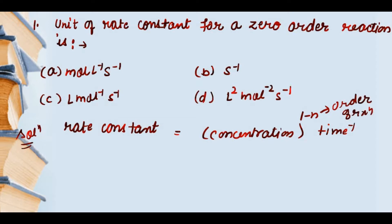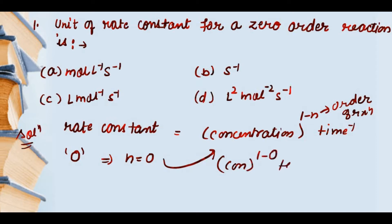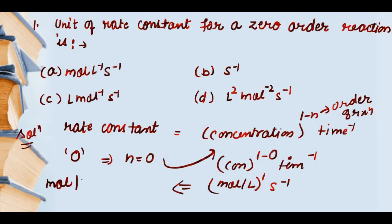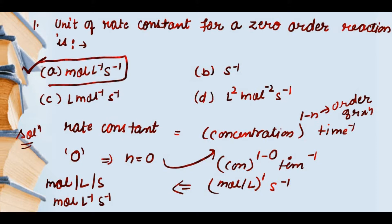Yahaan pe humein zero order reaction di gayi hai, so n = 0. Is equation ke andar agar hum n = 0 put karein, toh yahaan se milega: concentration to the power (1 minus 0) into time to the power minus 1. Concentration ki unit hoti hai mol per liter to the power 1, aur time inverse hoga second inverse. Toh yahaan se milta hai mol per liter per second, or mol liter inverse second inverse.